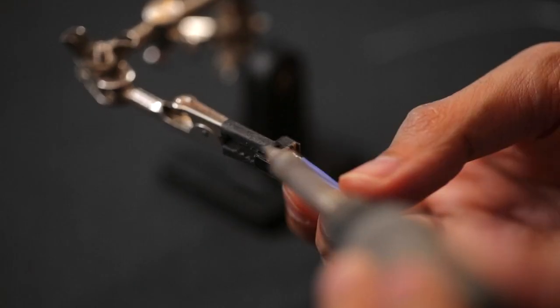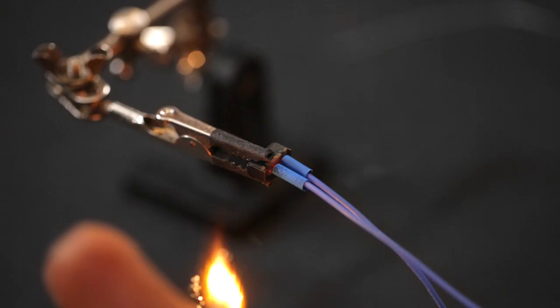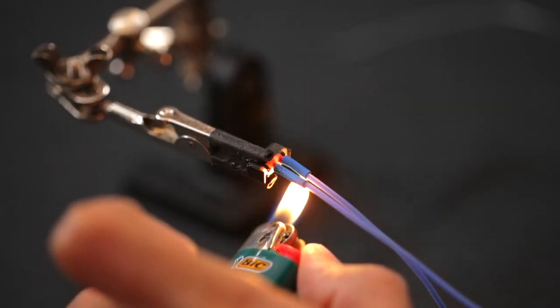Now let's connect the wires to the slide switch. It's easier to do this if the leads are tinned first. Pieces of heat shrink tubing insulate the exposed connections.